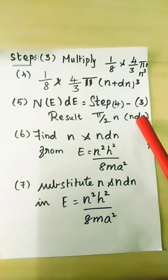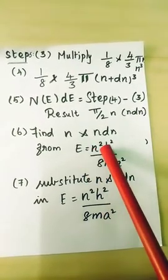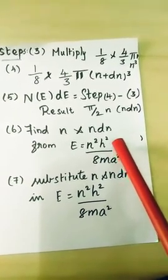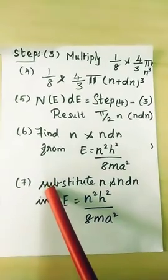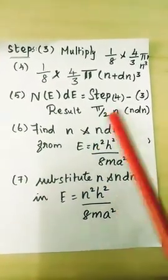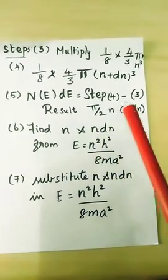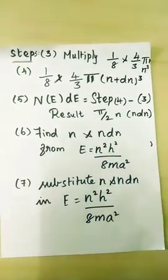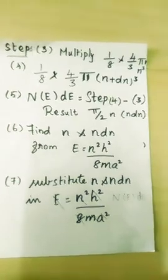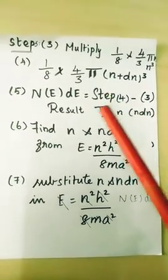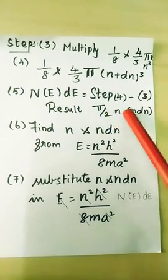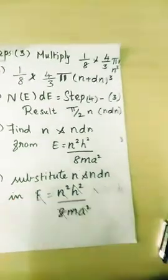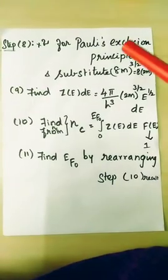Next we have to find N and N plus dN from the equation E = N²h²/(8mA²) — quantum mechanical concepts we already studied. Then, substitute the values of N and N+dN into the N(E)dE result, so we can get the next step result by substituting N and dN into the N(E)dE equation.